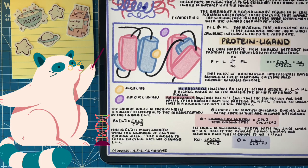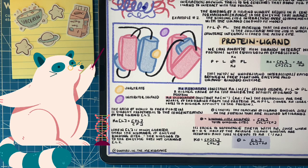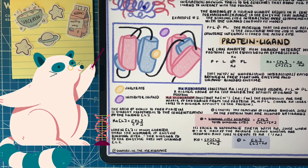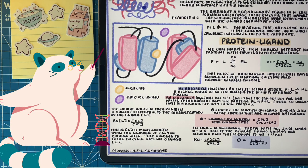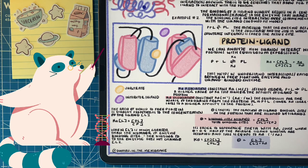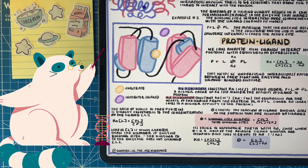Since we're looking at protein-ligand interactions through the eyes of equilibrium and we have that reversible reaction, we're going to look at the protein-ligand complex as the product, and the concentration of the protein and the concentration of the ligand as the reactants. That's why we get products over reactants — the same concept as with chemical equilibrium.